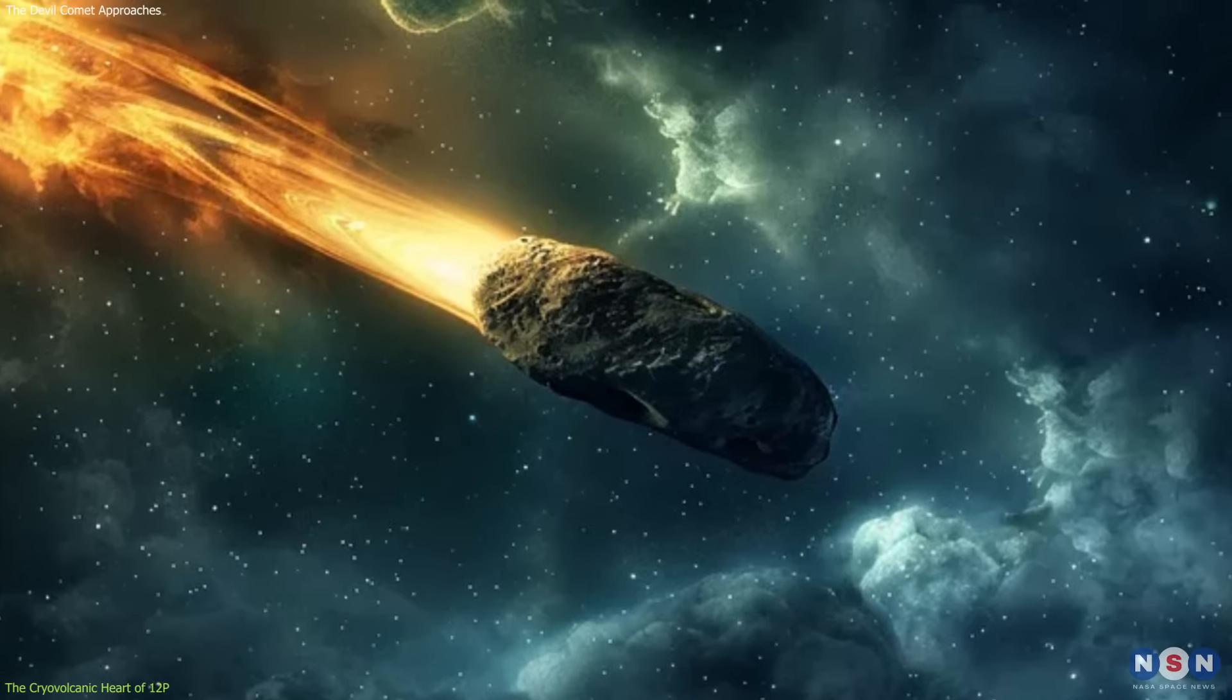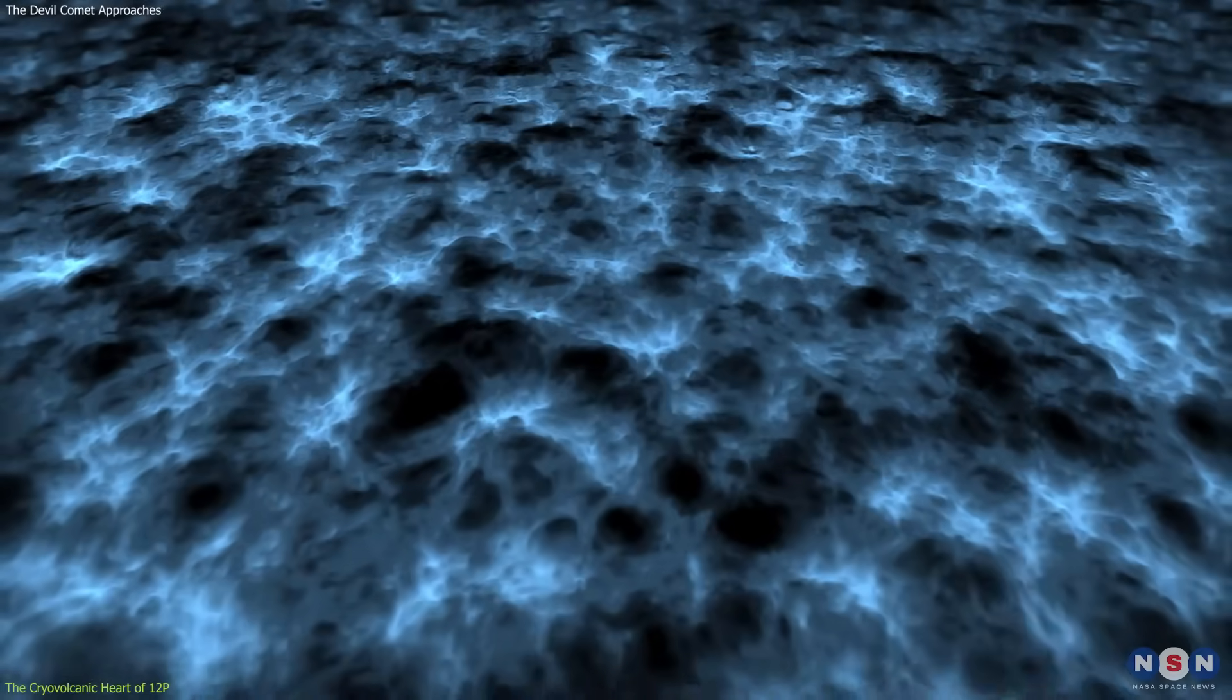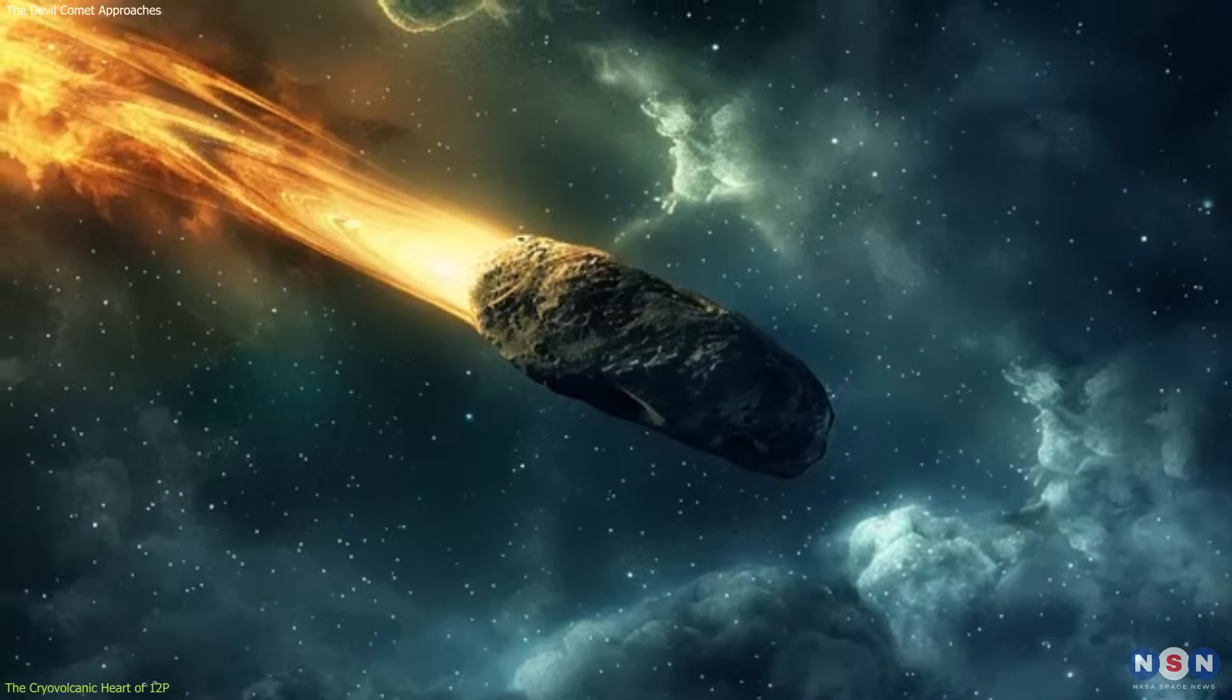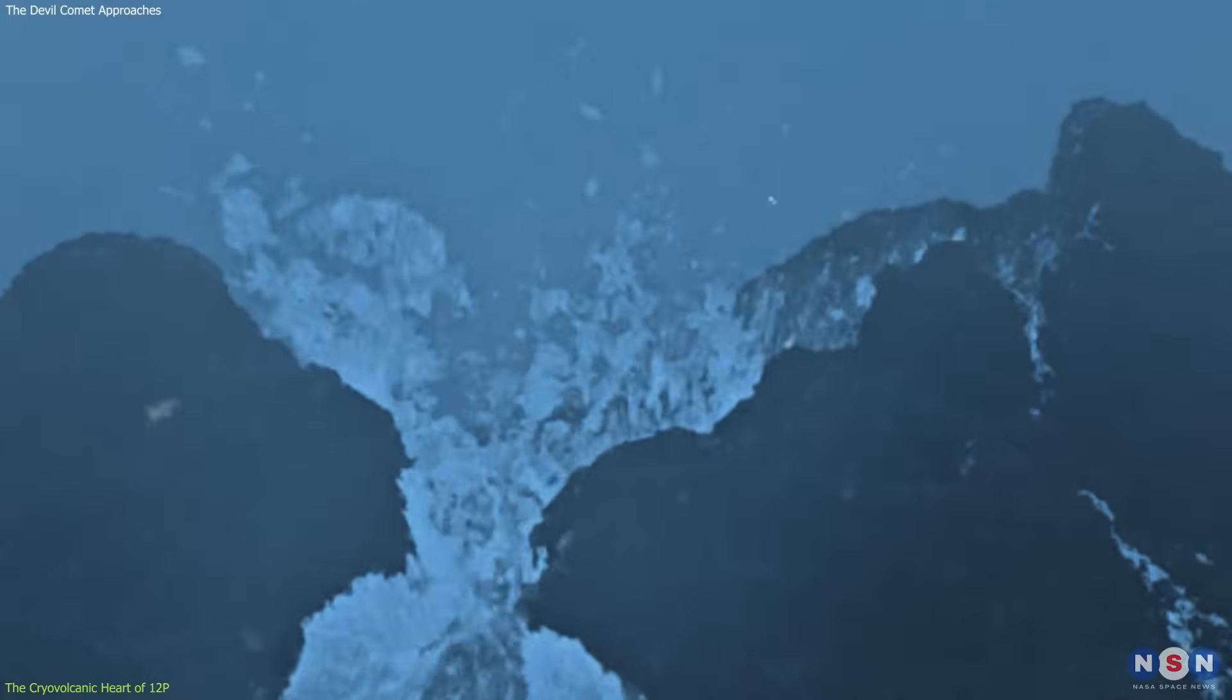These cracks act as gateways, releasing a torrent of cryomagma, a mixture of water, ammonia, and other volatile substances, into the void. This process is akin to volcanic eruptions on Earth, but with a frosty twist.